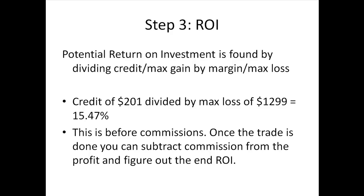Step three: how do you find the ROI? The potential return on investment is found by dividing the credit by the maximum loss. Our credit was $201 and our max loss was $1299. Dividing those gives a potential return on investment of 15.47%. This is the maximum you can make on the trade, and it's before commissions.